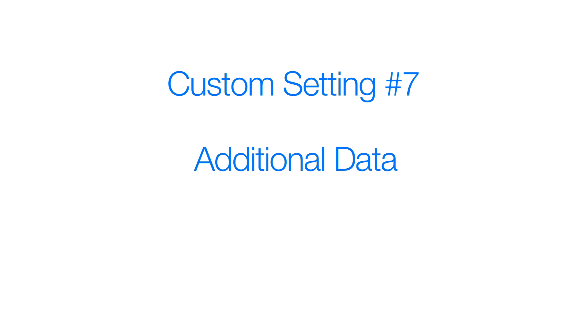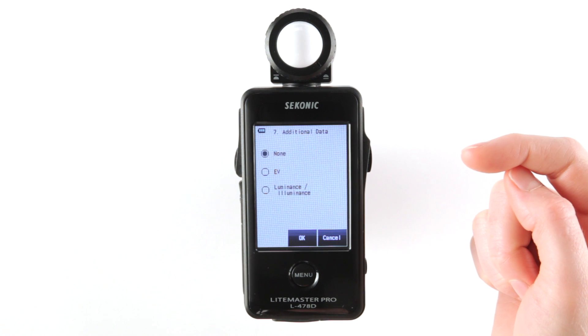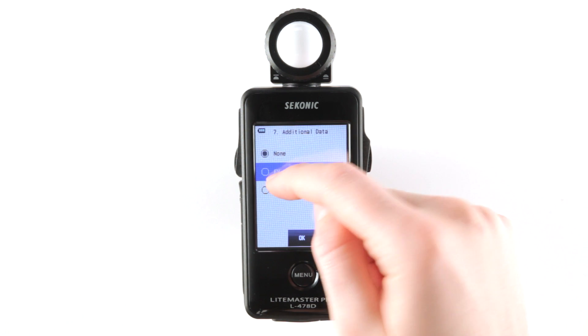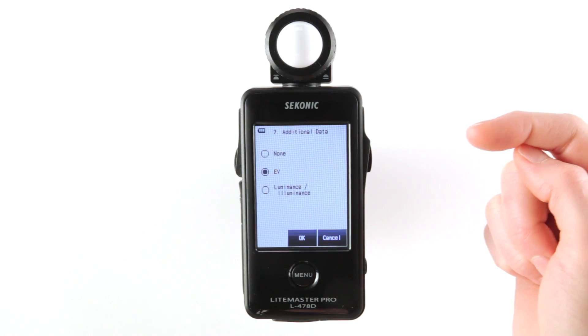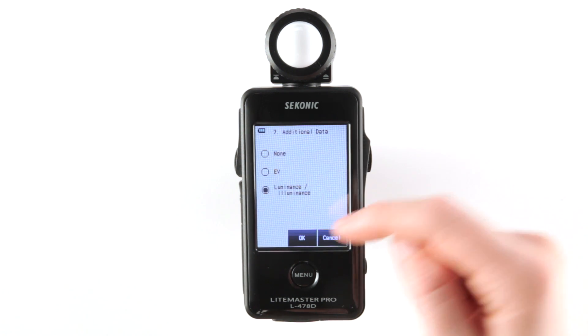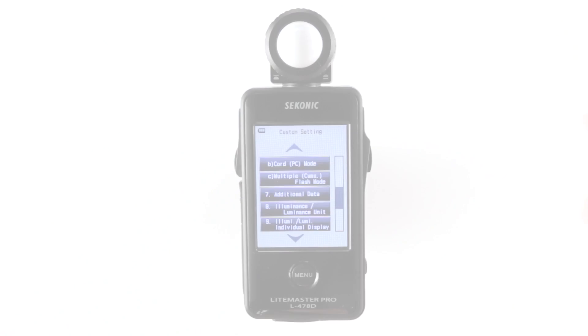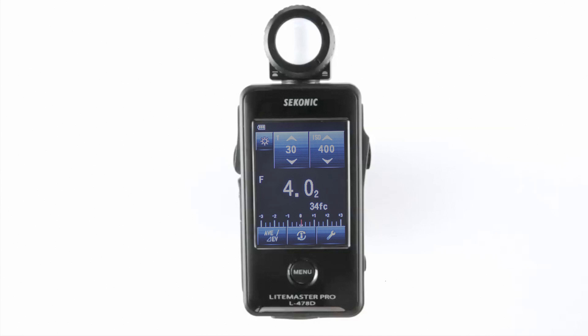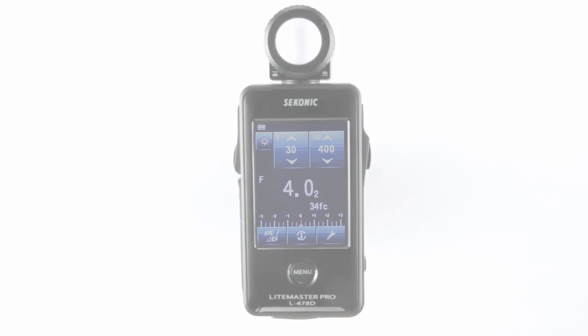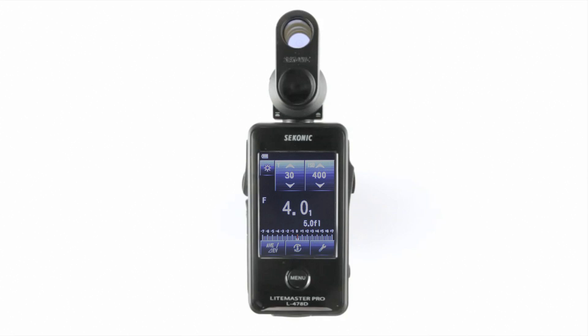Custom setting 7: additional data. Measuring of exposure value (EV) or luminance and illuminance can be simultaneously measured and displayed in any of the ambient modes. For your reference, incident metering is displayed in illuminance, and reflected spot metering with the separate purchase of a 5-degree viewfinder is displayed in illuminance.